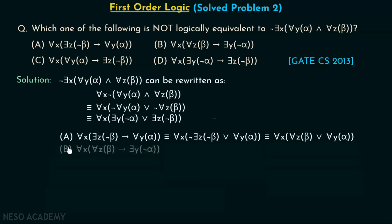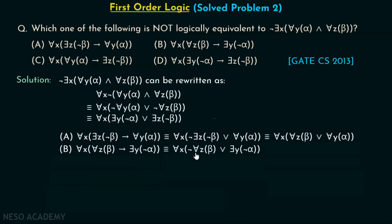Option B: for all x, for all z beta implies there exists y, not alpha. Converting the implication gives: not of for all z beta, or there exists y, not alpha. Moving the negation right gives: there exists z, not beta, or there exists y, not alpha. You can see this logical expression is equivalent to our target expression — the order is changed but they are equivalent.